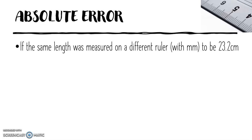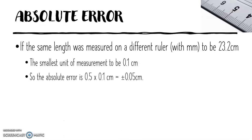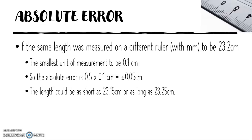If the same length was measured on a different ruler with millimetres to be 23.2 centimetres, the smallest unit of measurement would be 0.1 centimetres. So the absolute error is 0.5 times 0.1 centimetres, which equals plus or minus 0.05 centimetres. The length could be as short as 23.15 centimetres or as long as 23.25 centimetres.